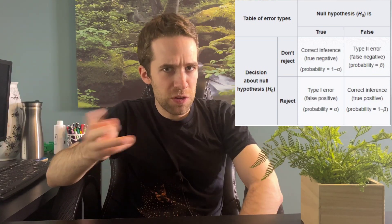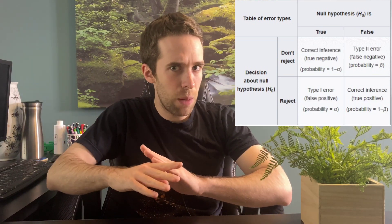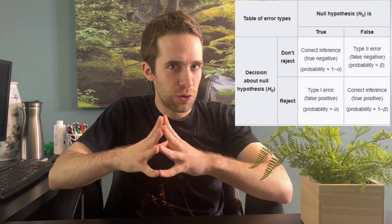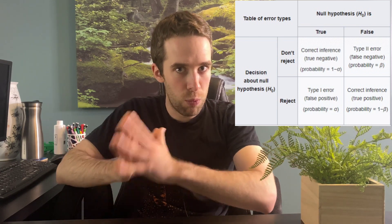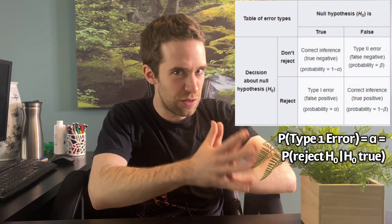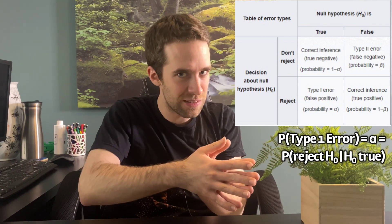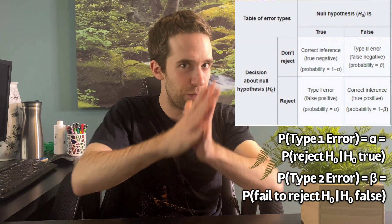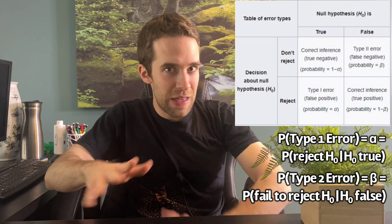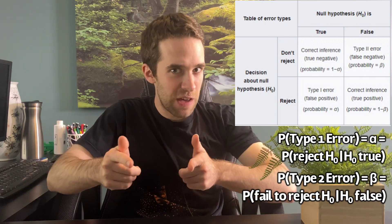One of the hardest things for most people who are just getting into statistics for the first time is remembering these definitions and keeping the difference between them straight. Using a table like this is pretty helpful, but personally, when I was learning these for the first time, I found it helpful to just think about these as conditional probabilities. If you just remember that H0 being true goes with type 1 error — if H0 is true, the only way we can make an error is to reject H0. With type 2 error, that goes with H0 being false; the only way we can make an error there is if we fail to reject H0. So if I just remembered that H0 being true went with type 1 error, I could figure out all the pieces of both type 1 and type 2 error.